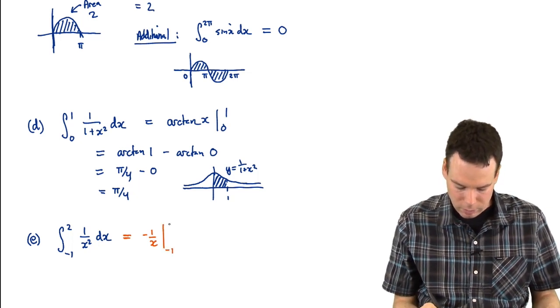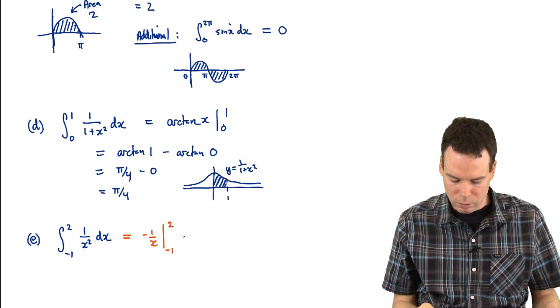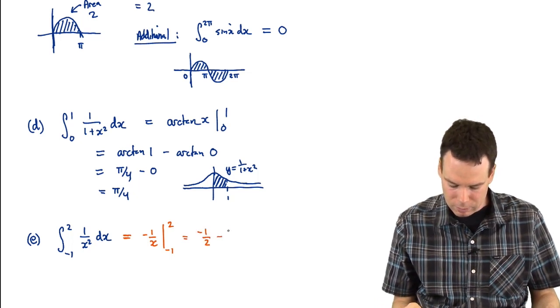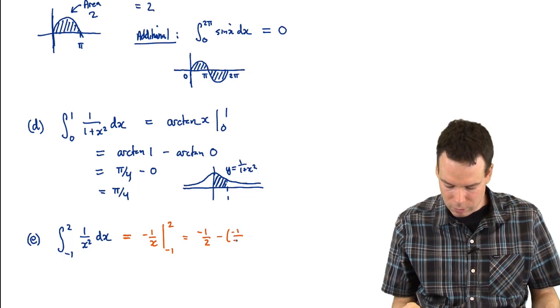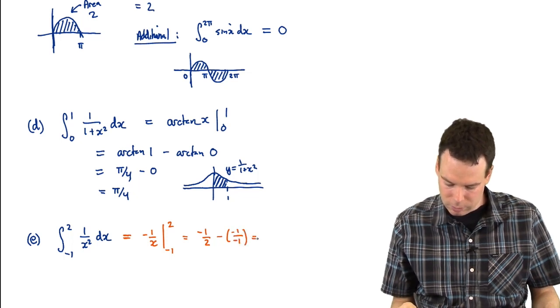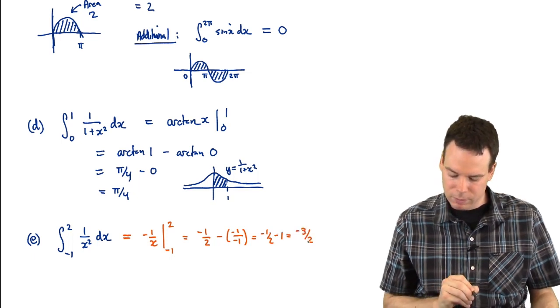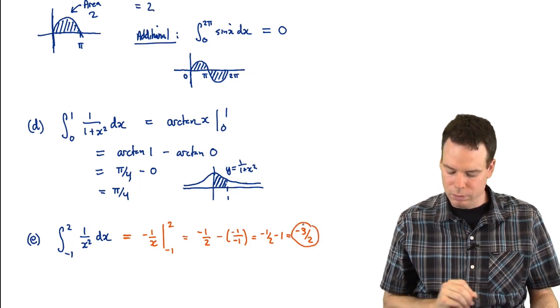We go from negative 1 to 2, we pop these values in, so that's negative 1/2 minus negative 1 over negative 1, so that's negative 1/2 minus 1, or negative 3/2. There's our answer.